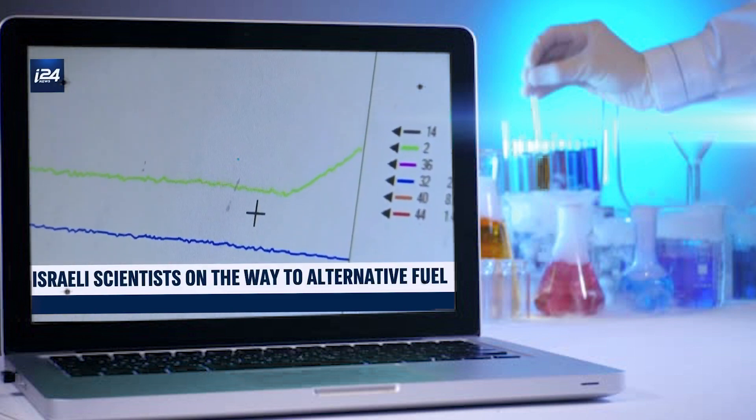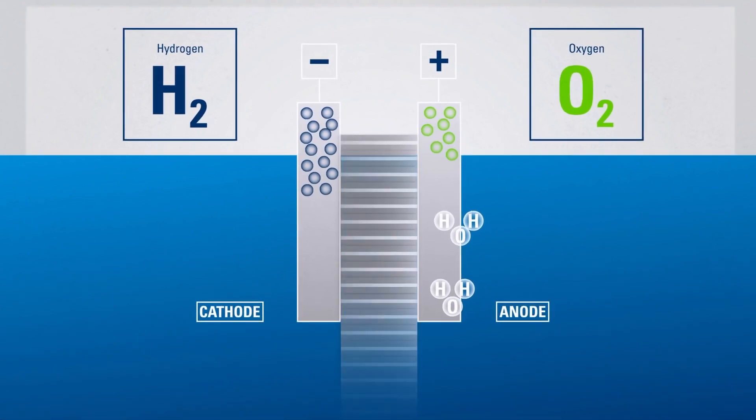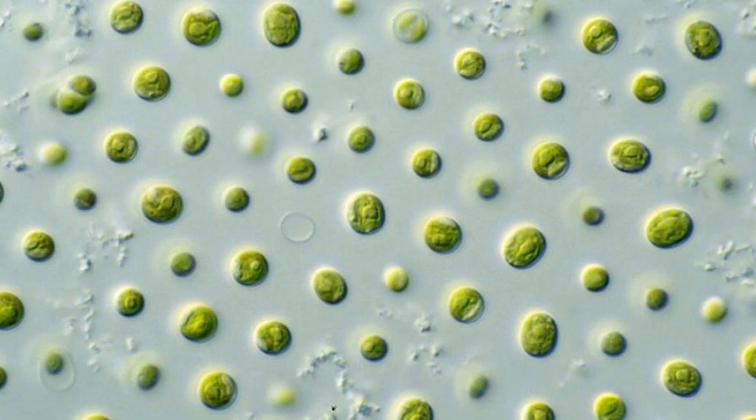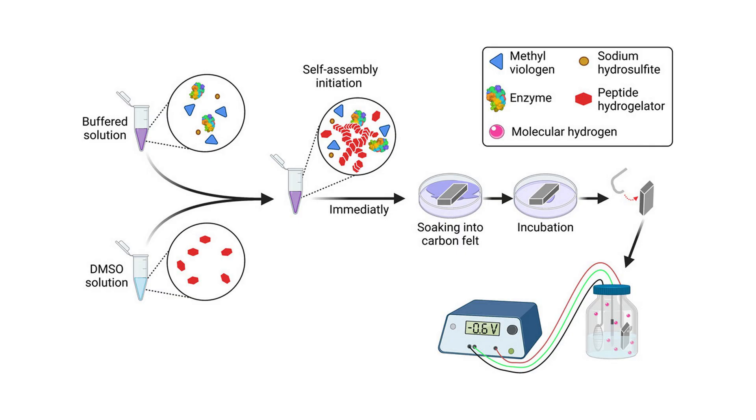Now, if you don't understand how this whole thing works, I'm going to try and explain it. So instead of applying electrolysis to water, they are using enzymes, which when they are coupled to an electrical charge, they produce green hydrogen.